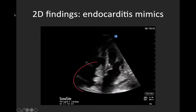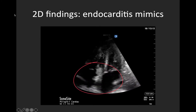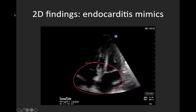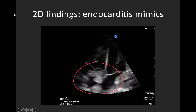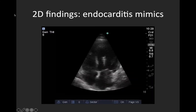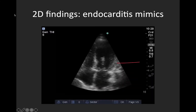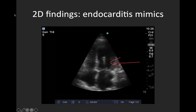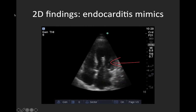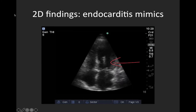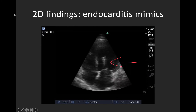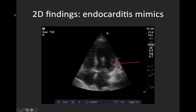This is another endocarditis mimic. Note that the hyperdensity seems to be attached to the interatrial septum rather than the valve — this was an intracardiac tumor, a lipoma. And one last mimic: here you can see an echogenic linear structure in the left atrium and ventricle, however it doesn't appear to move with the rest of the cardiac structures and wasn't visible in any other view. So this is an example of artifact.